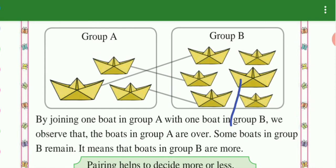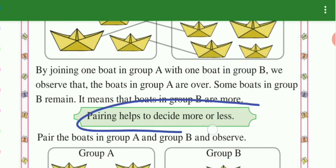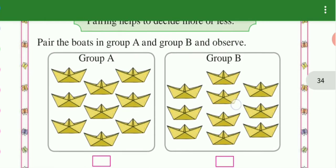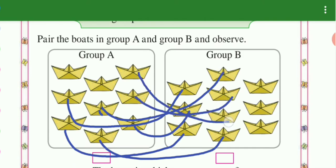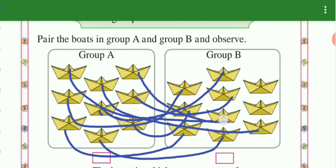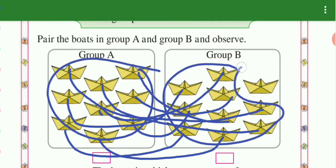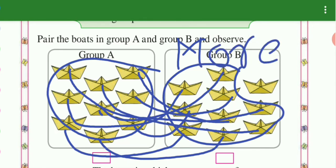It means group B has more boats and here are less boats. Pairing helps to decide more or less. Next, pair the boats A and B and observe. Pair, pair, pair — two and three. The whole pair is complete in A. And in B, one boat is left over, meaning more boats are needed. Group B has more and A is less.